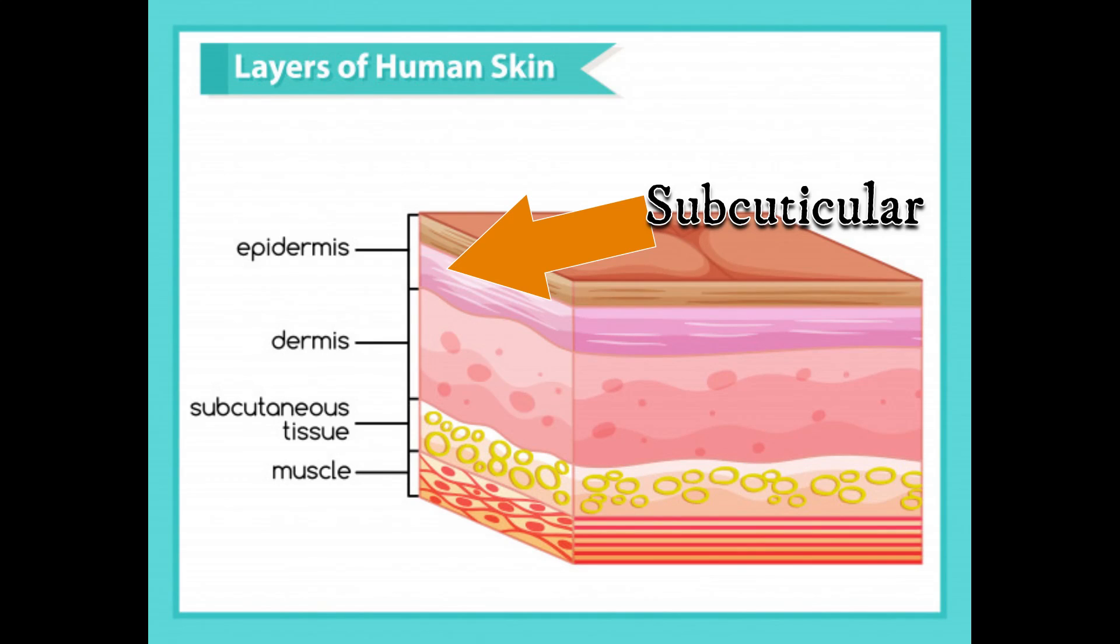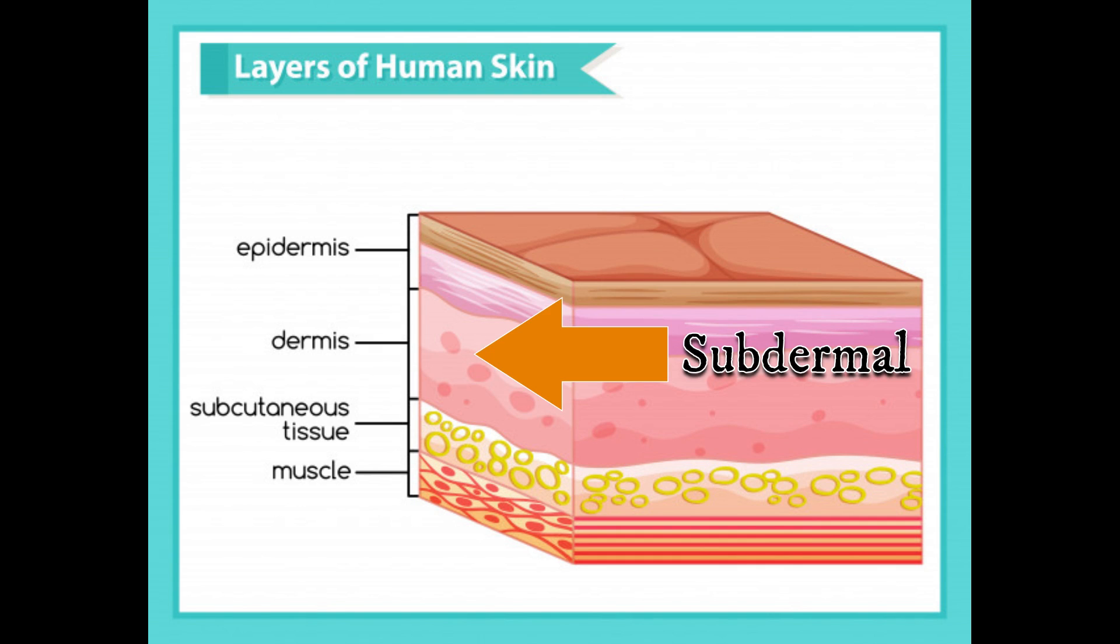Before we dive into suturing techniques, I wanted to take a minute to talk about wound closure and the importance around it, to give you a better understanding. Majority of the time, any incision that you make on the body is going to consist of, first, your subcuticular layer. That's like your epidermal layer that you're going through and that's most superficial. Just below that, we call it a subdermal layer, which is just below that subcuticular layer.